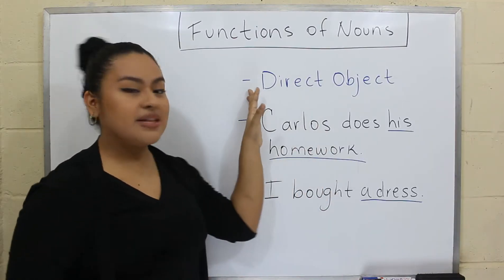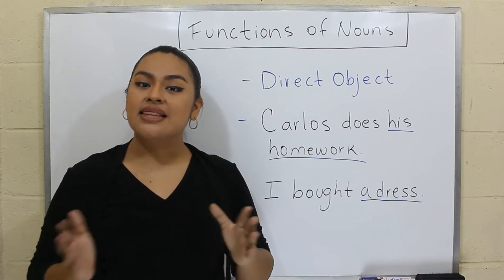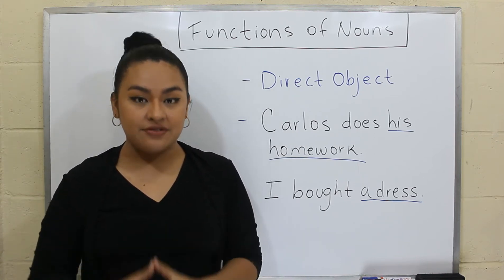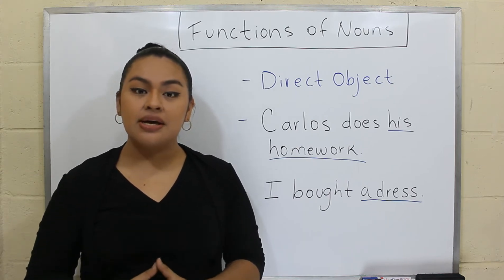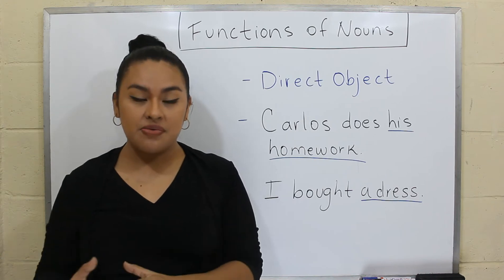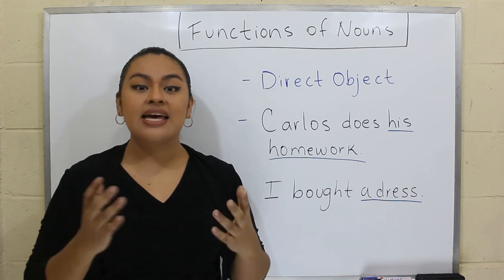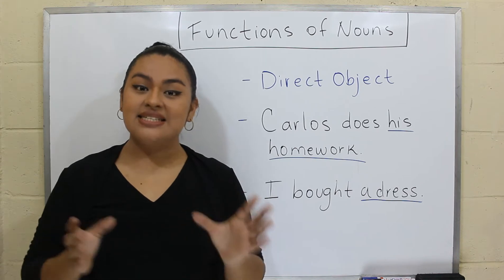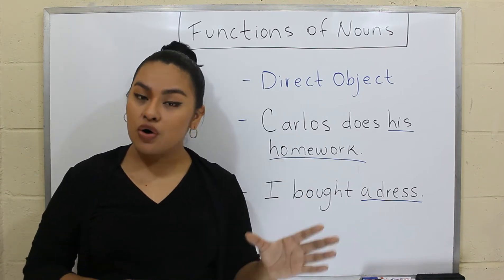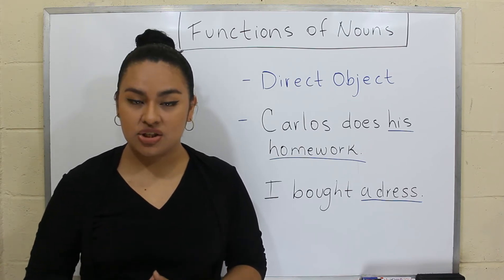Let's start with the direct object. In a sentence, the subject usually performs the action indicated by the verb. But this action might be directed or oriented to someone or something. And this someone or something is the direct object. The direct object is a noun, pronoun, or words acting as nouns that receive the main action.